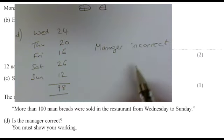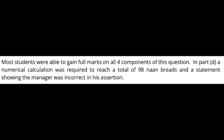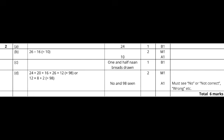So that's the answer to those questions. Let's see what the examiner had to say. Yep, you have to show the calculation out to 98. It wasn't enough to say the manager was wrong—you have to show why he's wrong. So make sure you do that please. And the mark scheme: 24, 10, one and a half, and no, 98. It has to be seen as well. Excellent.